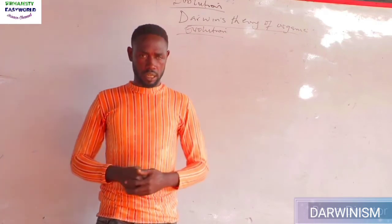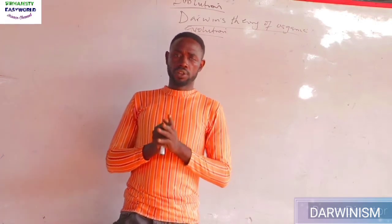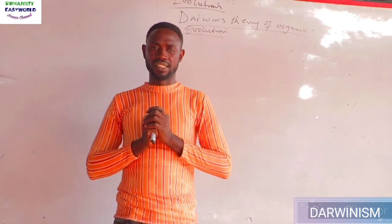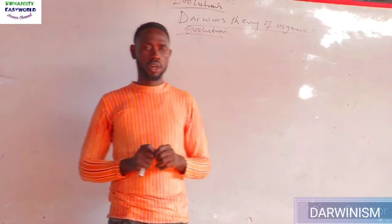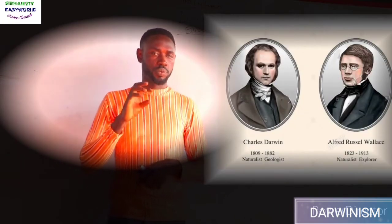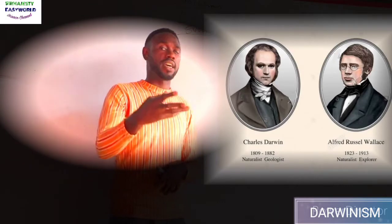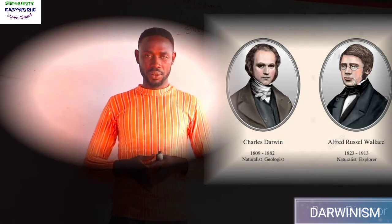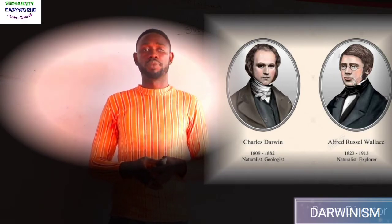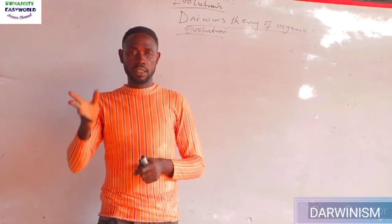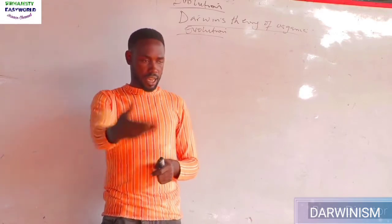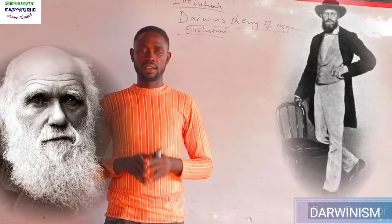For you to understand Darwin's theory of organic evolution, you need to understand natural selection. The theory of natural selection was collectively propounded — not only by Charles Darwin — take note: it was collectively propounded by Charles Darwin and Alfred Russel Wallace. Darwin published before Wallace, which is why Darwin is more prominent. But if asked, the answer should be Wallace and Darwin.